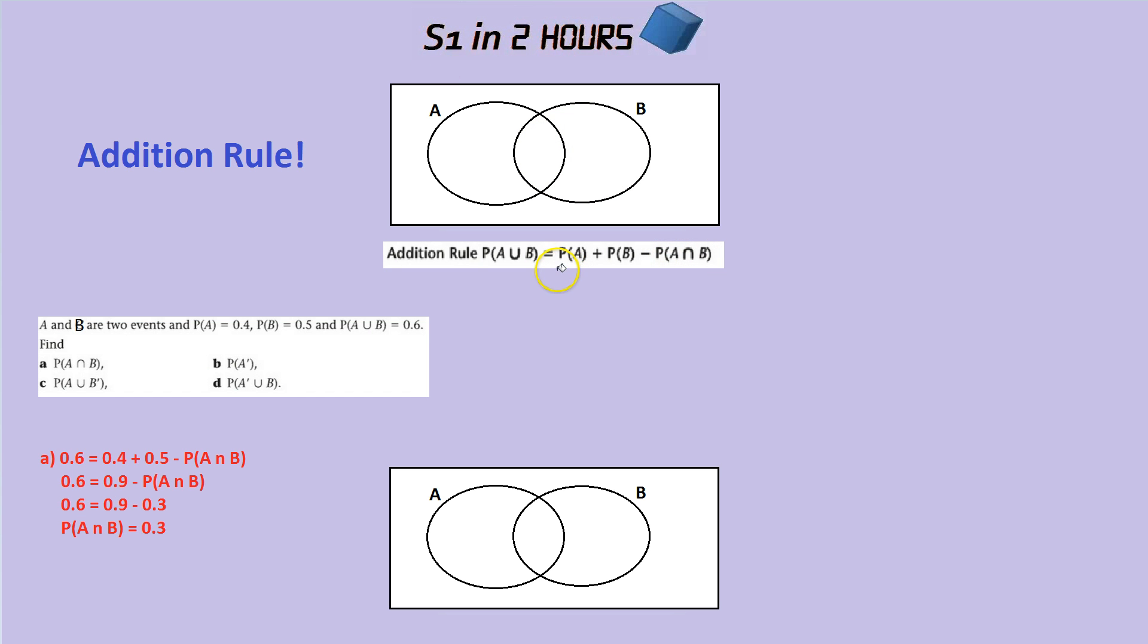Let's put that into practice in a real life question. So, the probability of A and B are 0.4 and 0.5 and the probability of A or B in this question is 0.6. Find the probability of A and B.